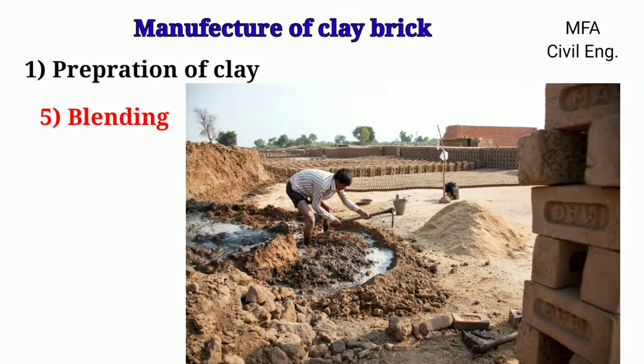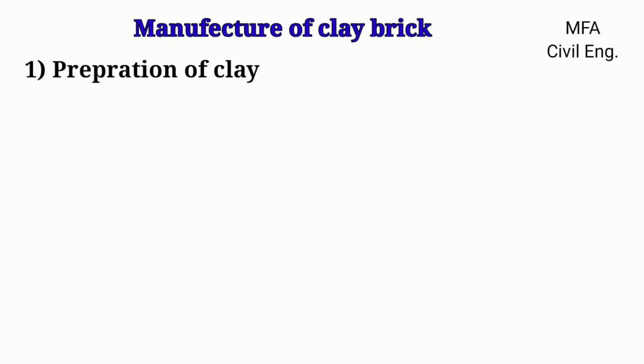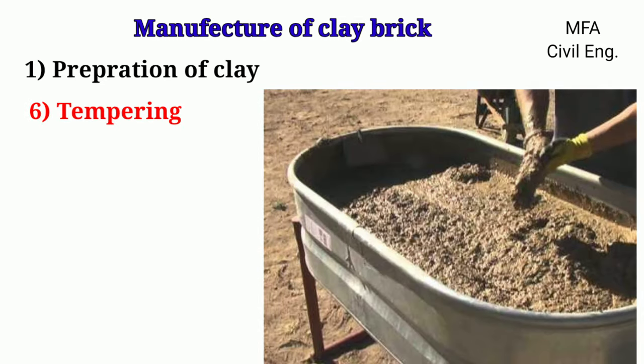Blending is a process in which a mixture of clay and other materials like chalk and sand is done by turning the mixture up and down in a vertical direction. Tempering is a process of kneading the clay into a homogeneous mass with uniform consistency and plasticity for the molding process. Kneading is either done by man or cattle. If bricks are manufactured on a large scale, the clay is tempered by passing it through a pug mill.